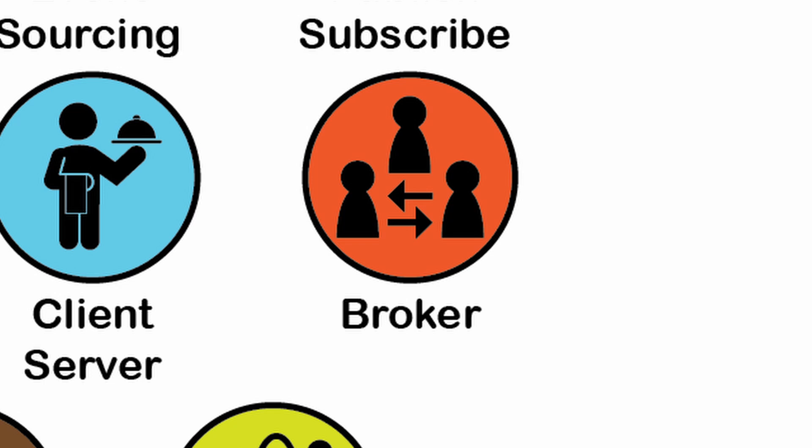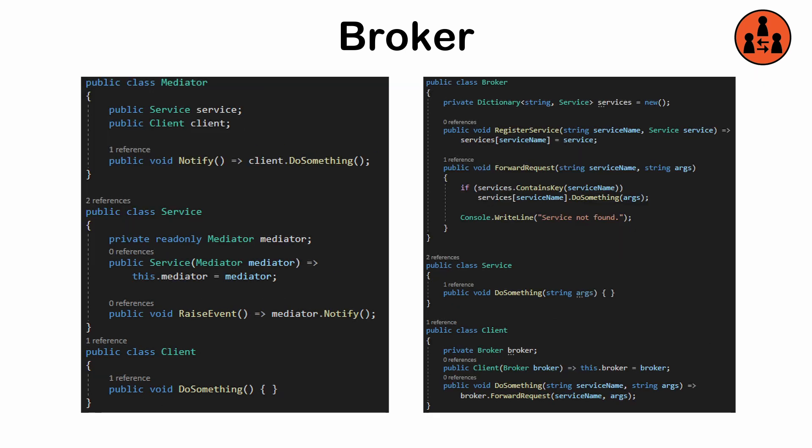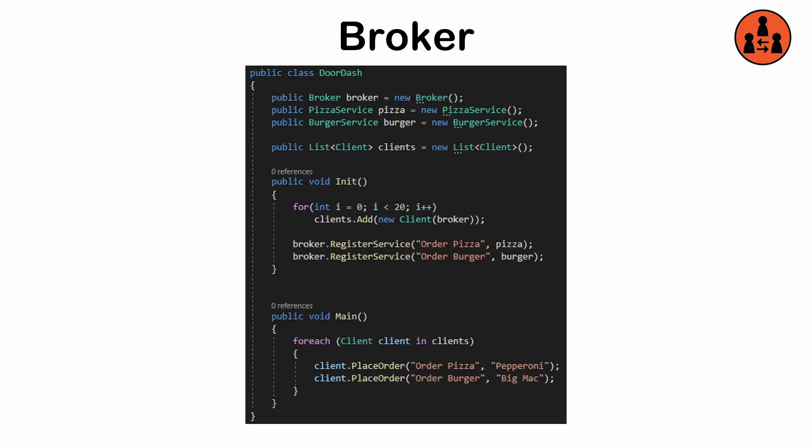The broker pattern. A way to facilitate communication between distributed systems by introducing a broker component that processes requests and responses between clients and servers. Where a mediator actively manages the exchange, the broker merely points each party in the right direction, similar to a receptionist or dispatcher. This pattern decouples systems, making it easier to scale and manage.